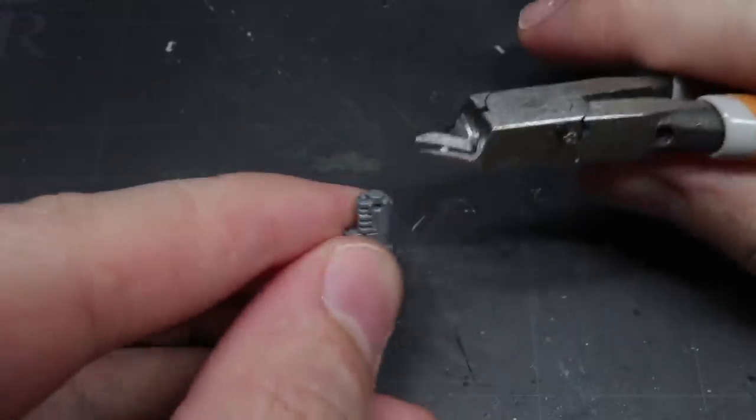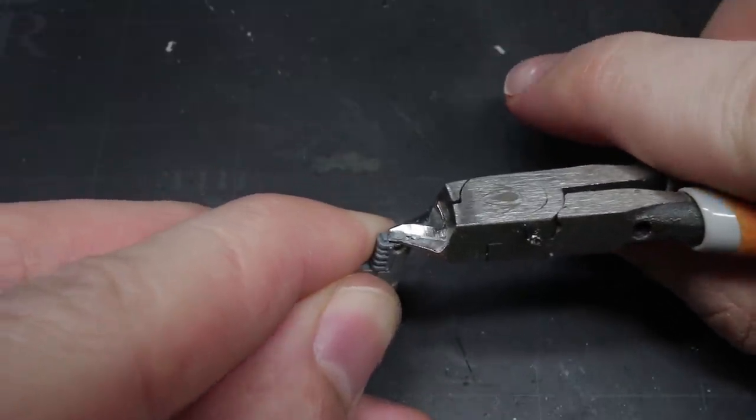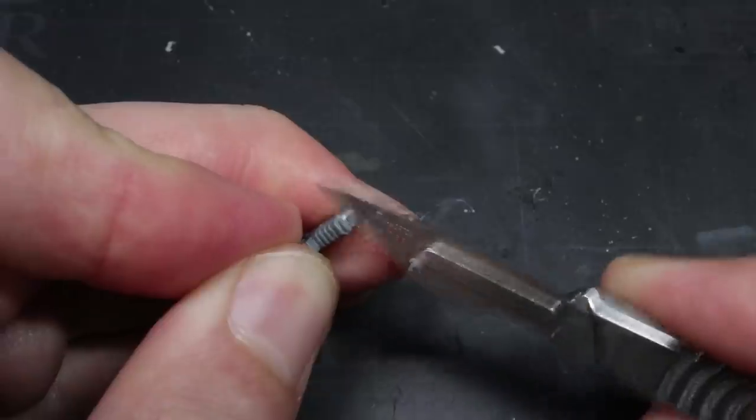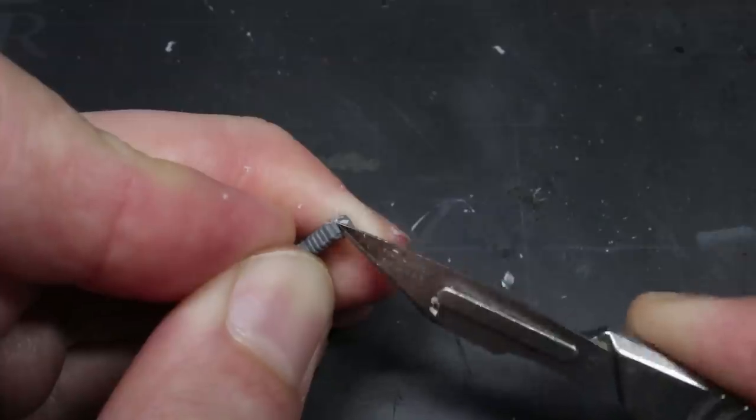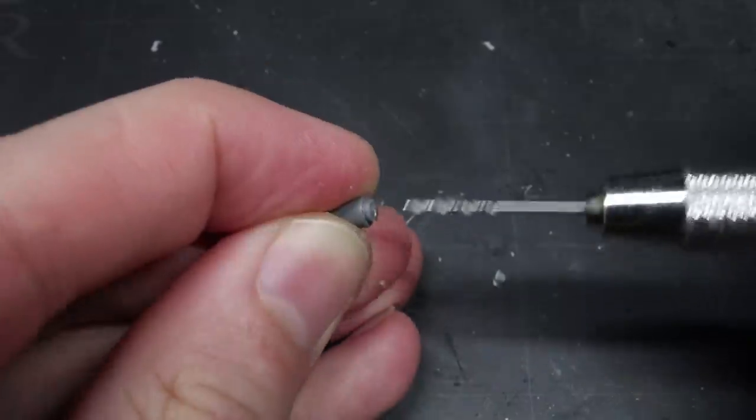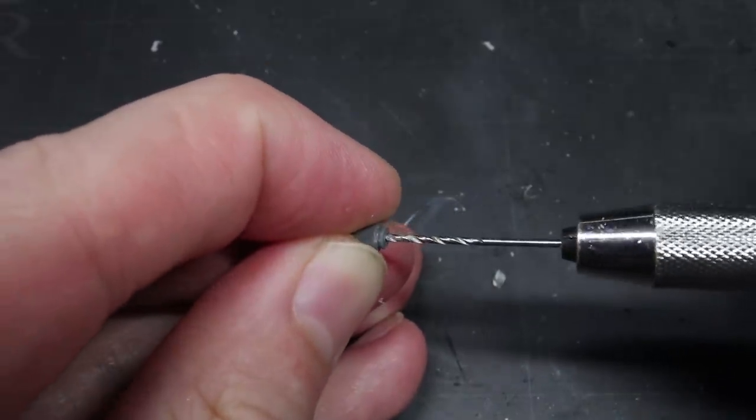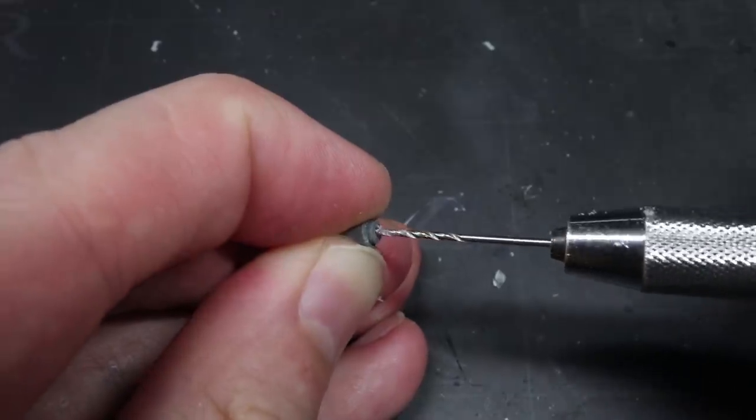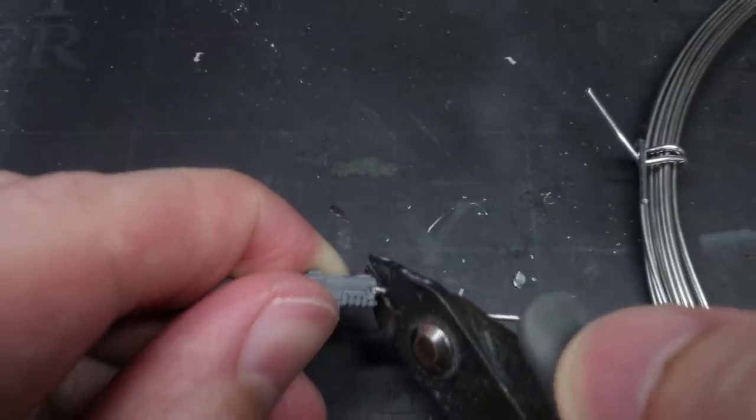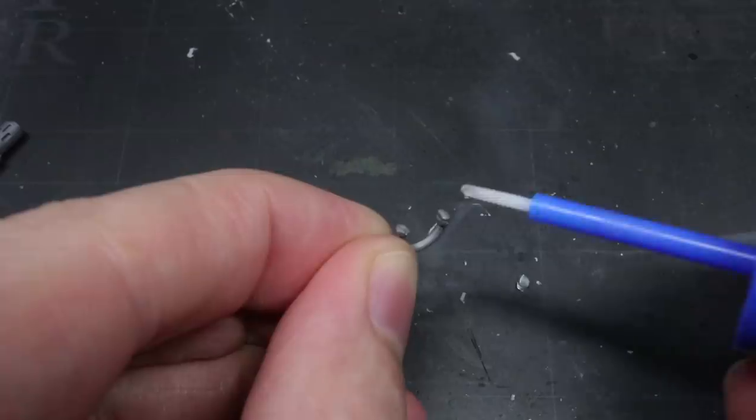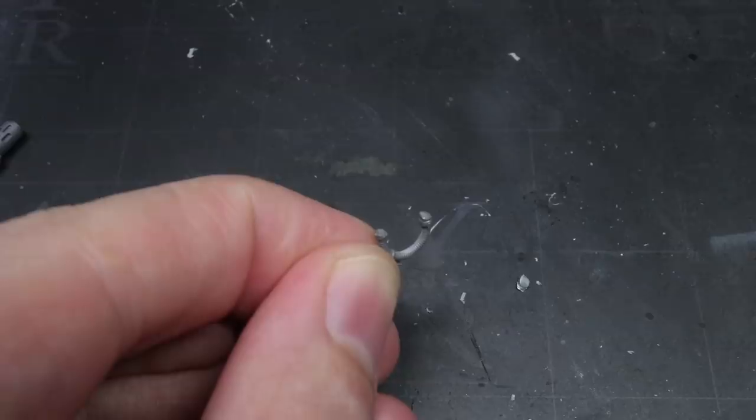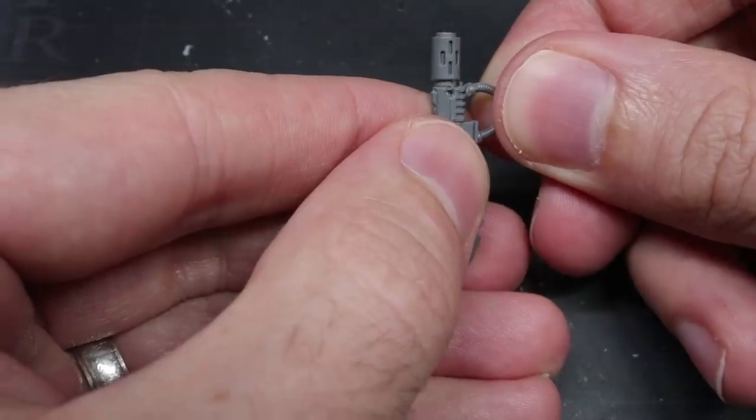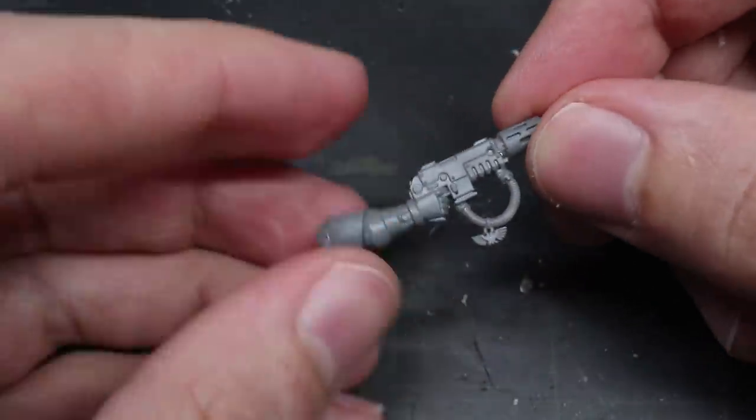With the arm prepped, I could continue with the assembly of the gun. First, I trimmed the slightly protruding end of the pistol to give me a flat surface to attach the melter barrel to. In a similar fashion to the axe hand, I then proceeded to drill holes into the pistol and the barrel before attaching a length of wire and supergluing the two halves together. Finally, the length of pipe that had been trimmed previously was then glued to the underside of the gun. And with that, the hardest parts of this conversion were completed.